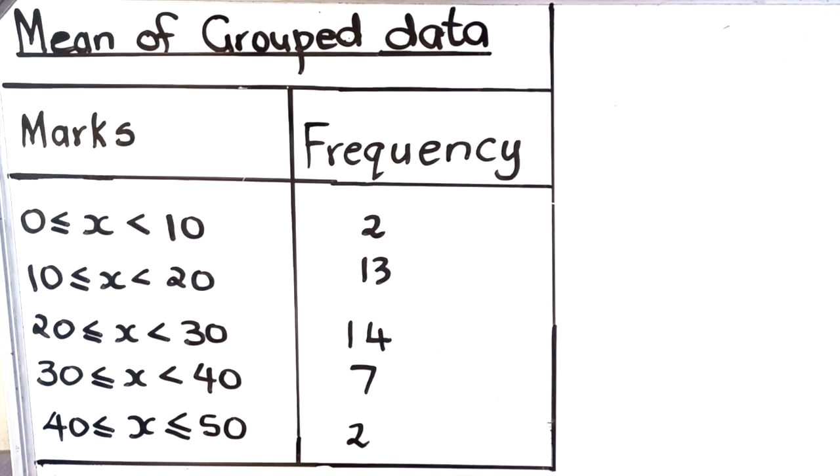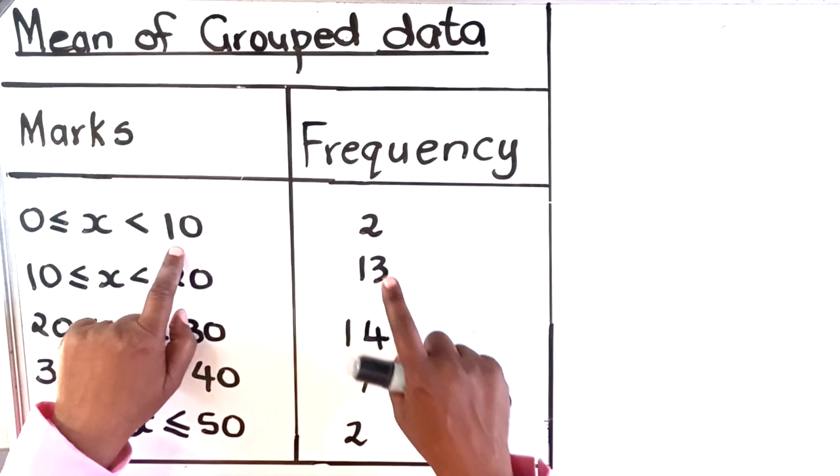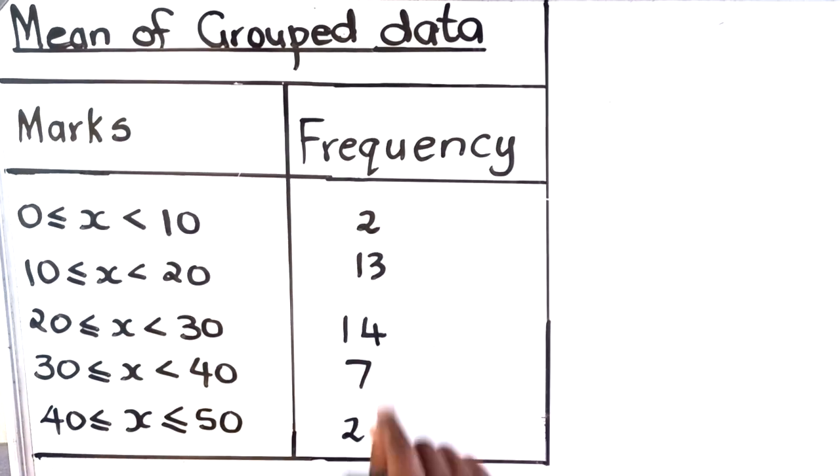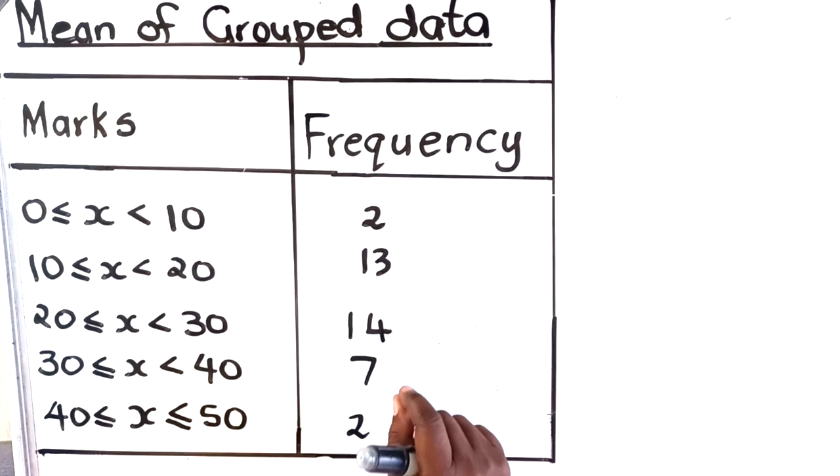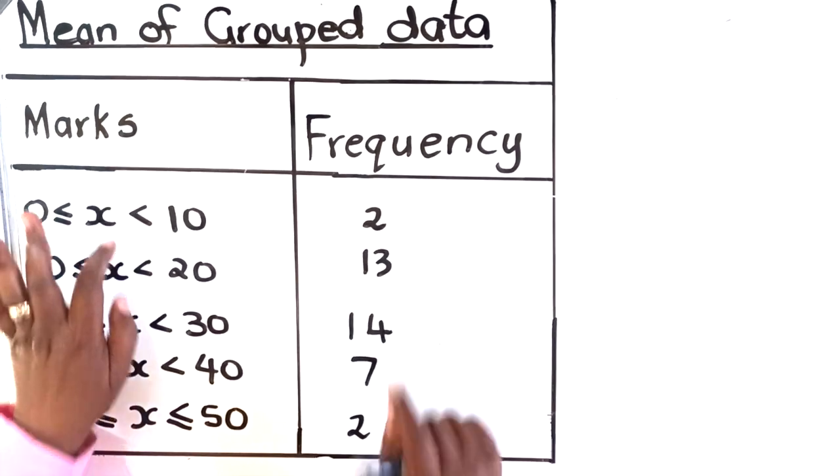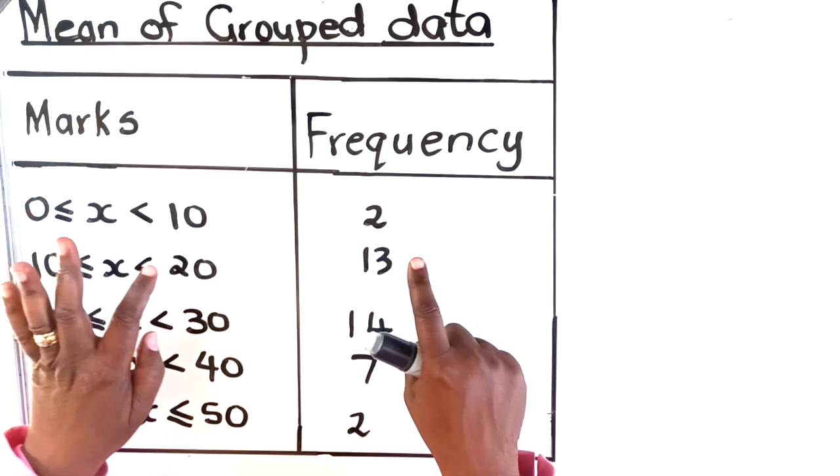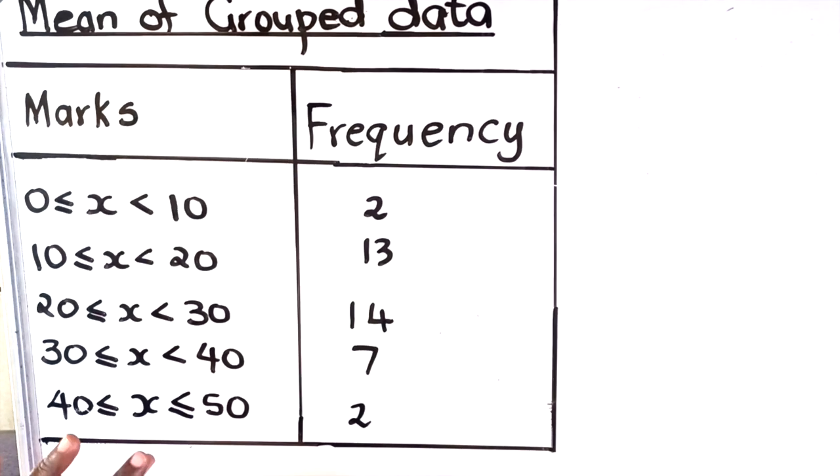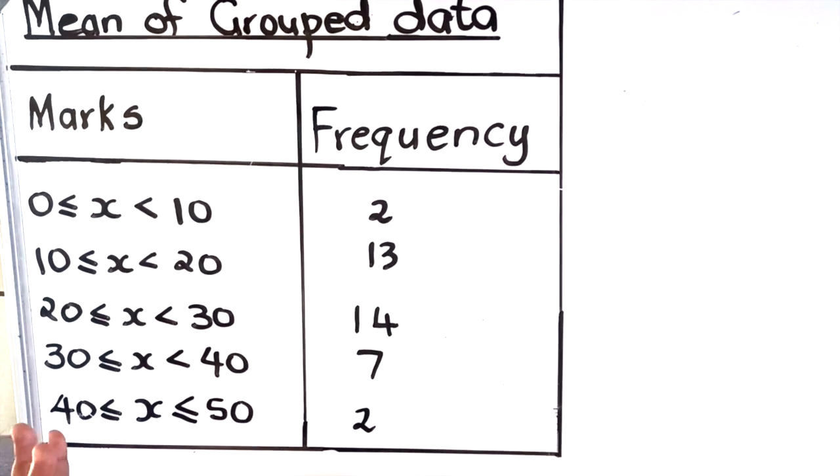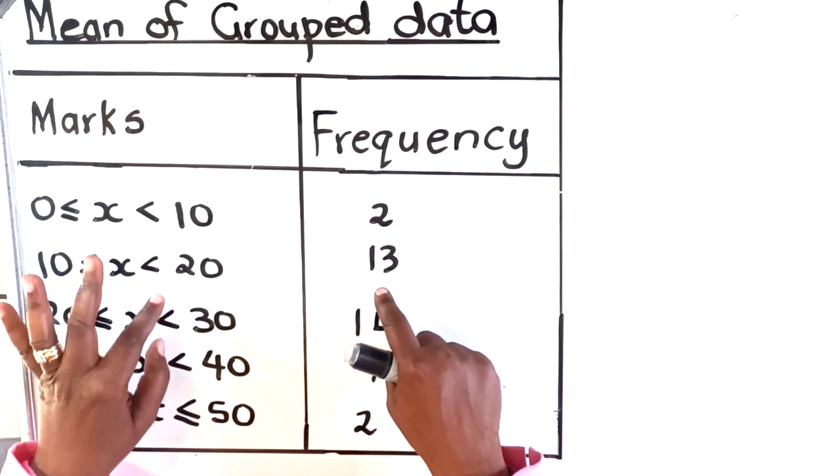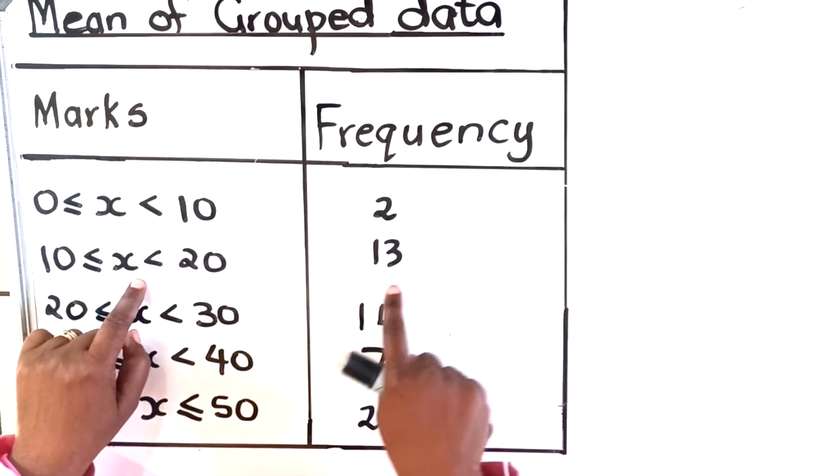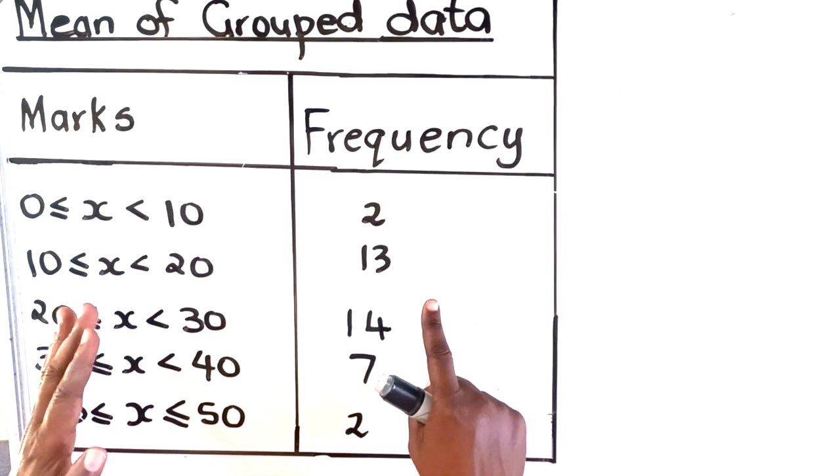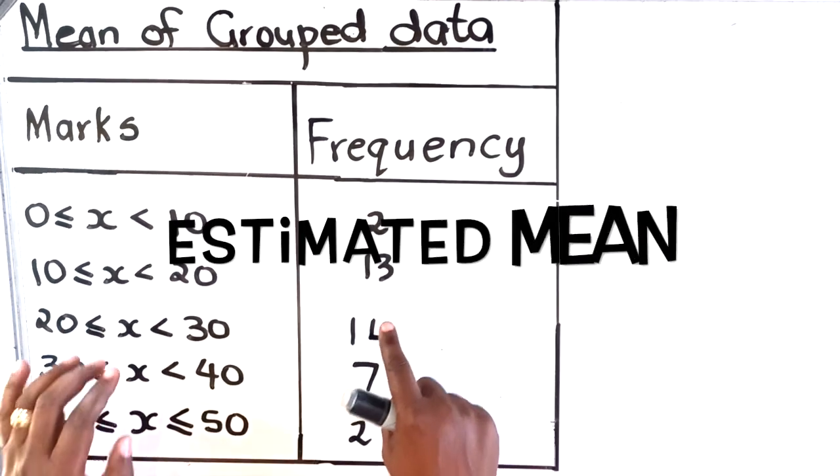Another thing with grouped data: when they say two learners got 0 to 10, you don't know exactly which mark they got - did they get 5, did they get 0, did they get 8 or 9? That's why when you calculate the mean, we say it's the estimated mean, because you don't know if 13 of them got 15 or 12 or 19. We don't know exactly, that's why we call it estimated mean.